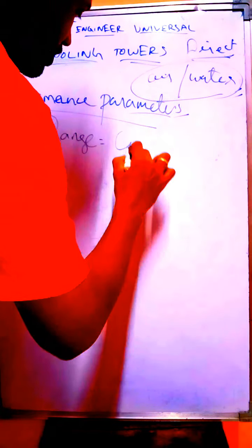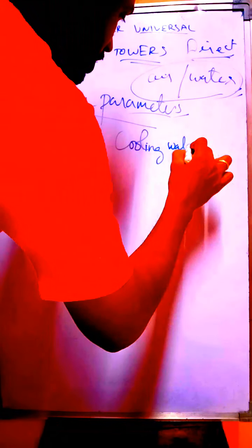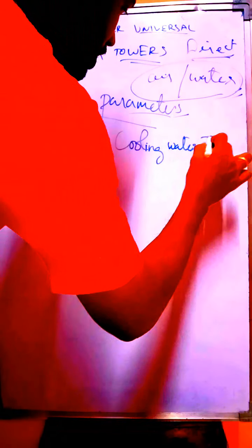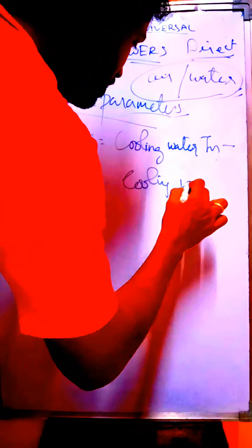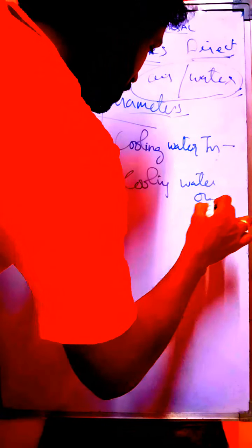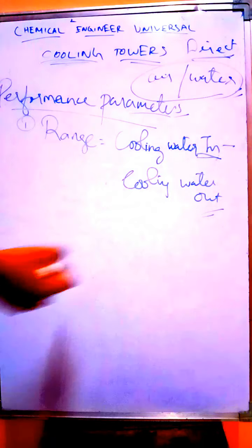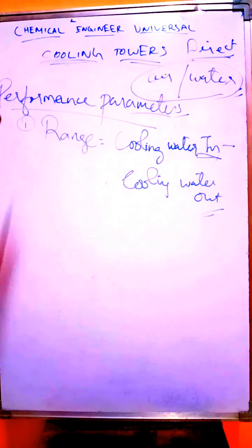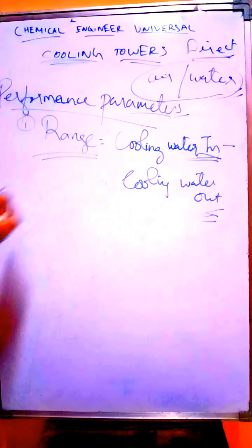The range is nothing but the difference between cooling water inlet temperature minus cooling water outlet temperature. The cooling water inlet will always be higher, and the outlet temperature will be reduced by contact with air. That's why we have a higher limit and a lower limit — inlet minus outlet. This is the range.